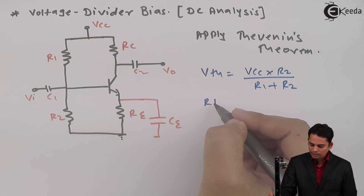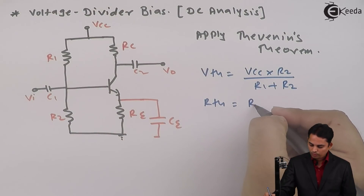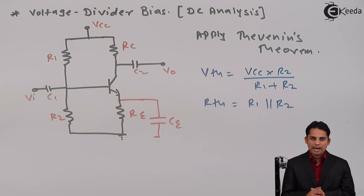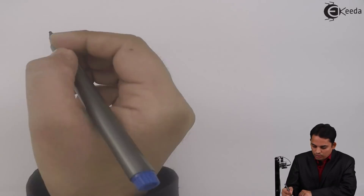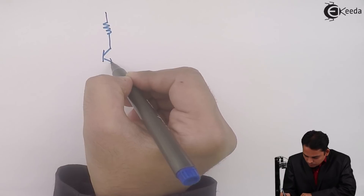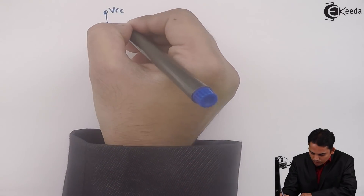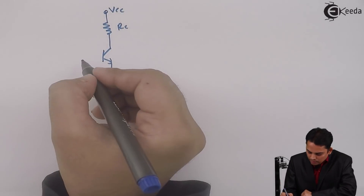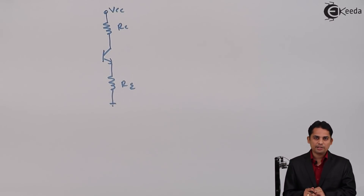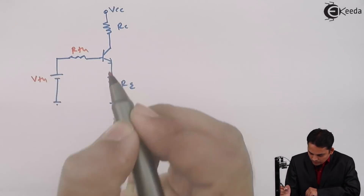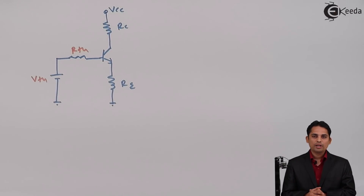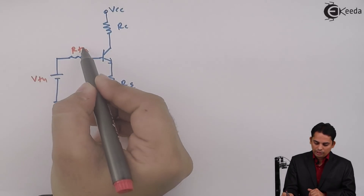Similarly, the Thevenin's equivalent resistance RTH is equal to R1 parallel R2. By applying Thevenin's theorem we have obtained VTH and RTH. The next task is to replace the base side with the Thevenin's equivalent circuit — a single resistor in series with the voltage source VTH — while the remaining part of the circuit stays the same.